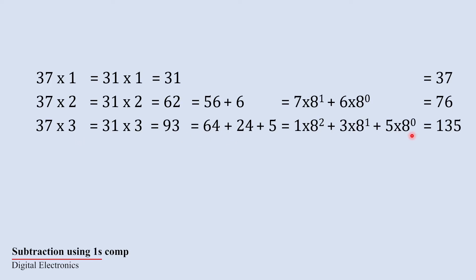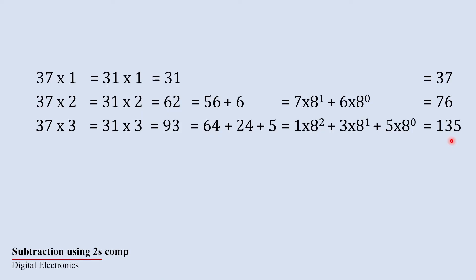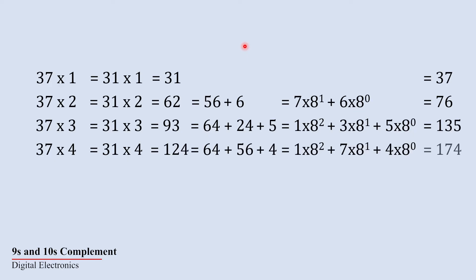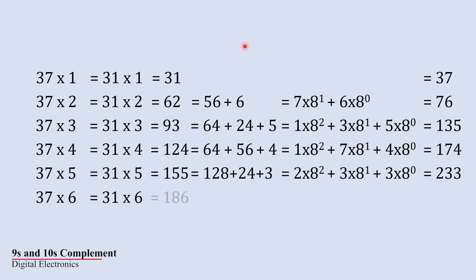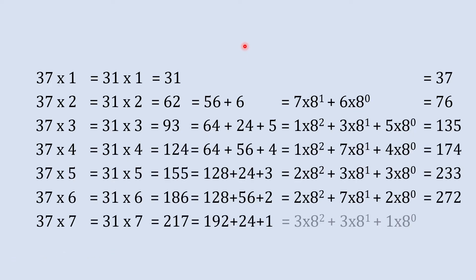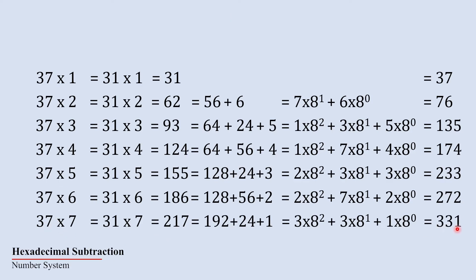If your concept about this conversion is not clear, you must watch the video on decimal-to-octal conversion — the link will be in the description and in the card above. I continue the same process for all remaining multiples. We go up to 37 sevens, which is 217 in decimal, and its octal equivalent is 331. You can pause this video and go through this process.